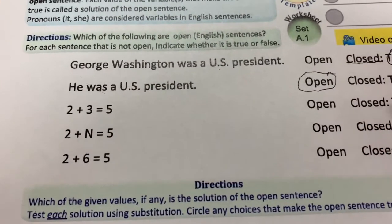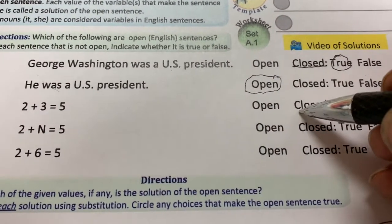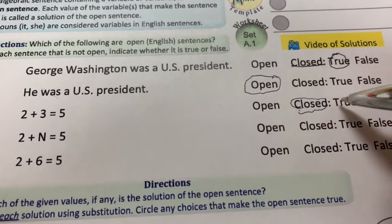2 plus 3 equals 5. That's closed. There's no variable. Is it true? Yeah.